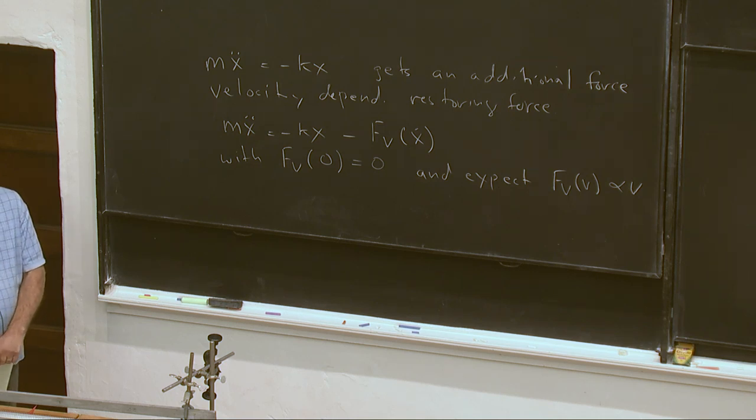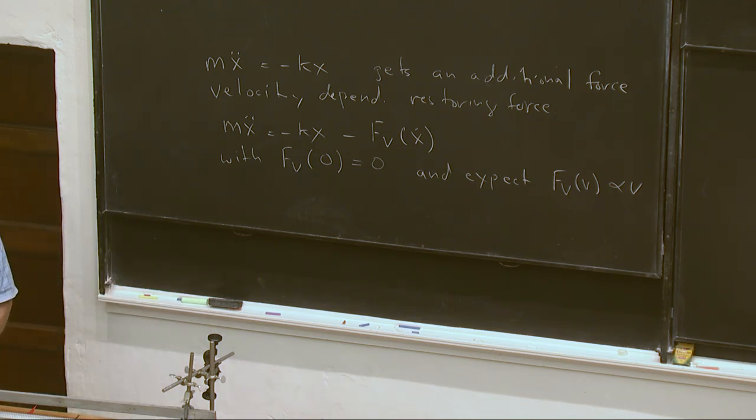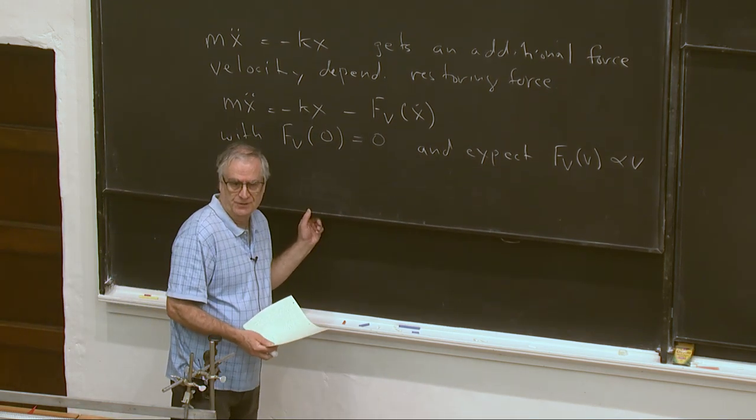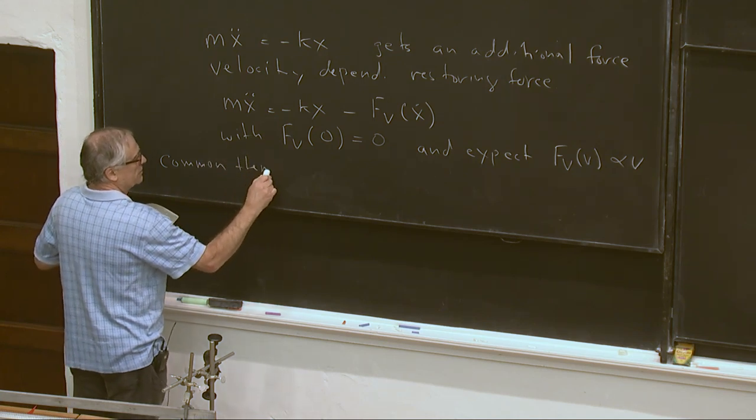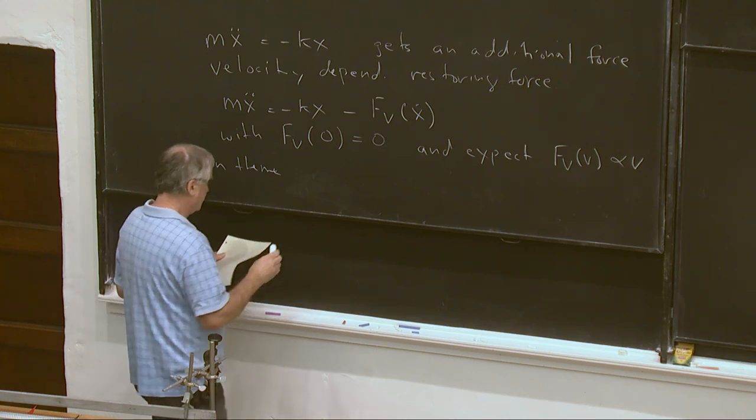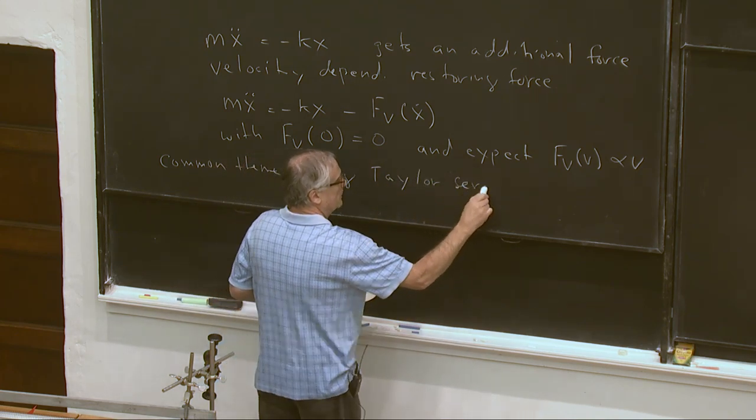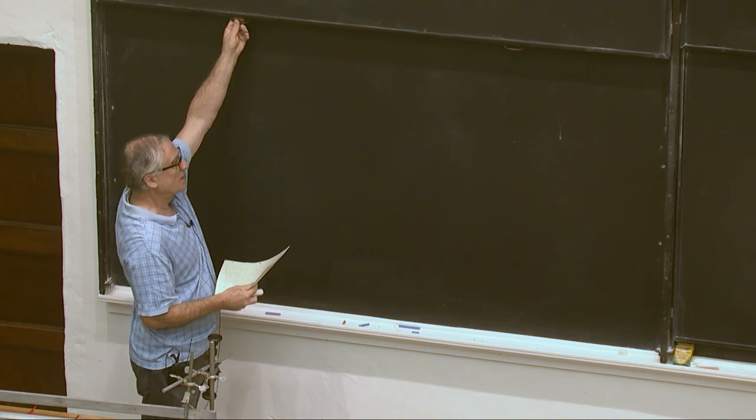If I had a dashpot with, you know, some configuration was filled with oil for slow enough motion that is for viscous motion, the force would be proportional to the velocity. Of course, at higher velocities the air resistance tends to go like v squared. In fact, it's a complicated function. But we can extract a common theme for small enough motion again, using the Taylor series again.